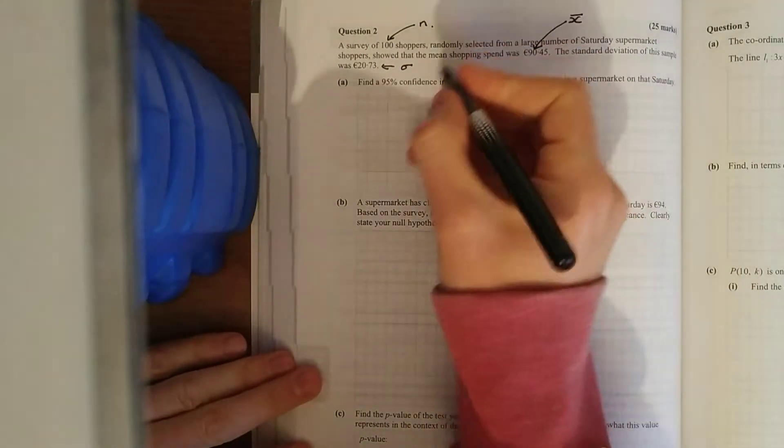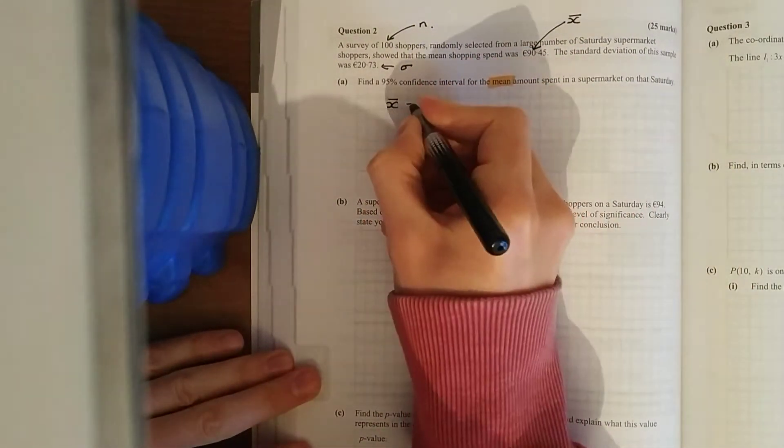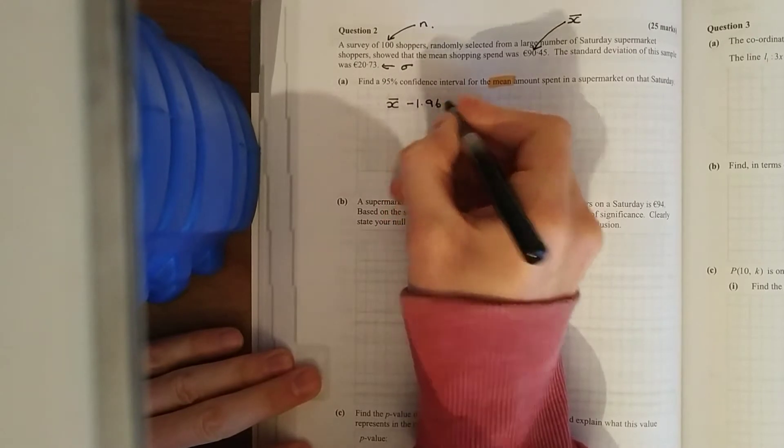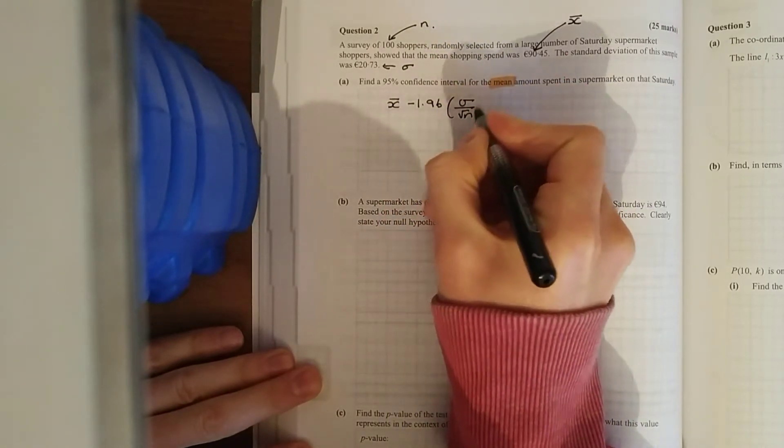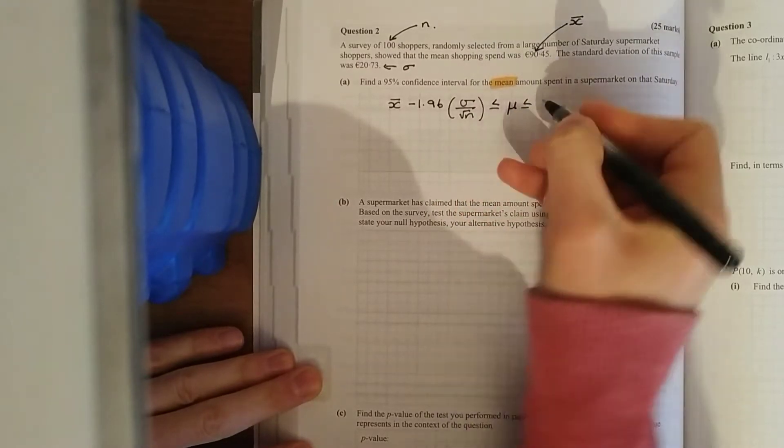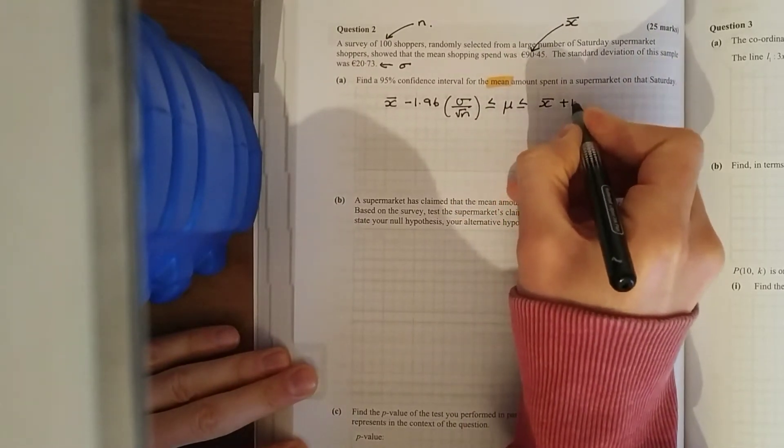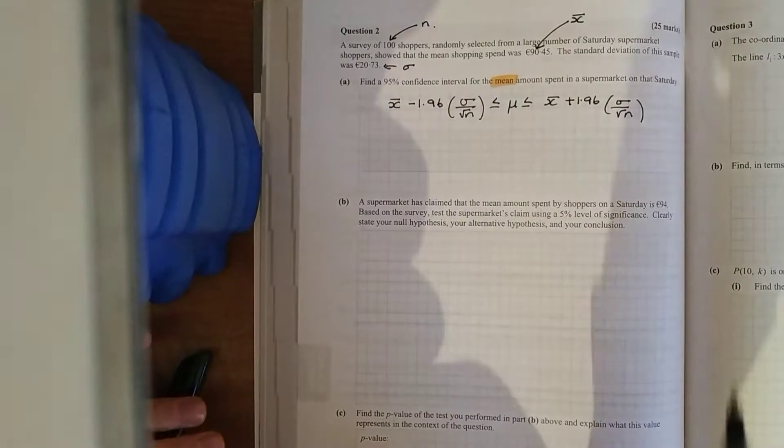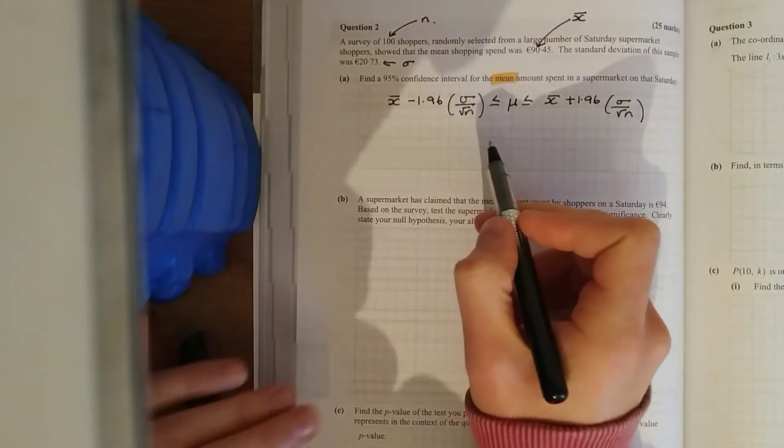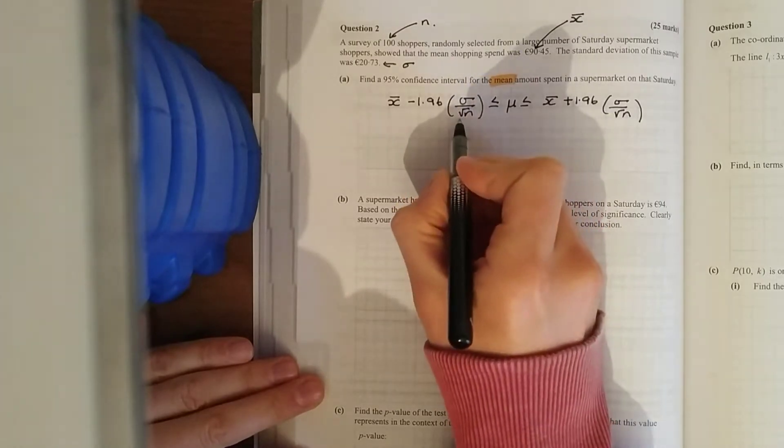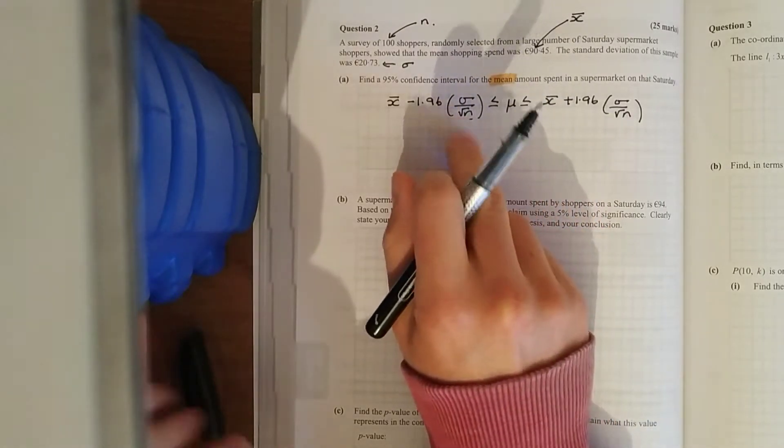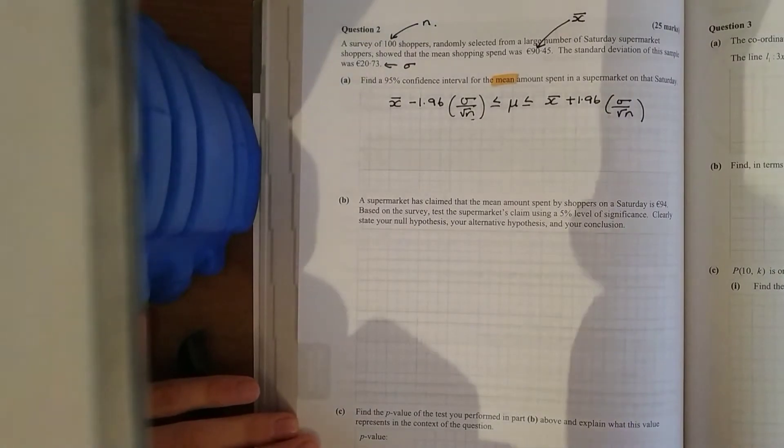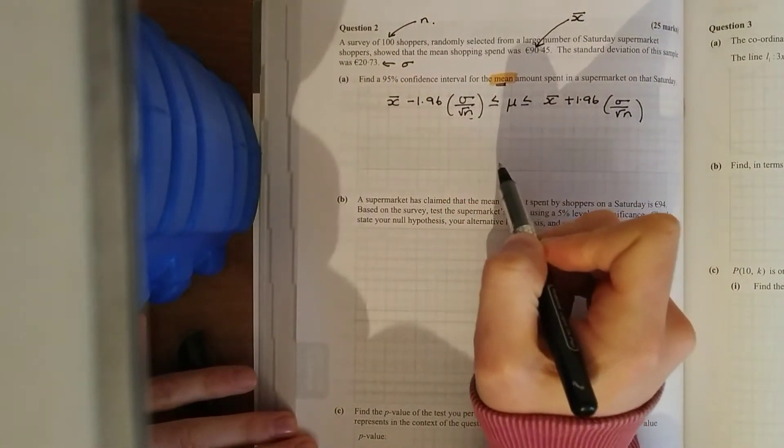And there's two confidence intervals that you need to know. Here it says find a 95% confidence interval for the mean. And when it's for the mean, the formula you need to remember is X cap minus 1.96 times the standard deviation over root N. So you're going to get an idea on the population mean based on a sample. We can be 95% confident the mean lies within the interval. This bit here, your standard error of the mean, that's at the bottom of one of the pages of the formula book. And it says for the mean, another confidence interval is for the proportion.